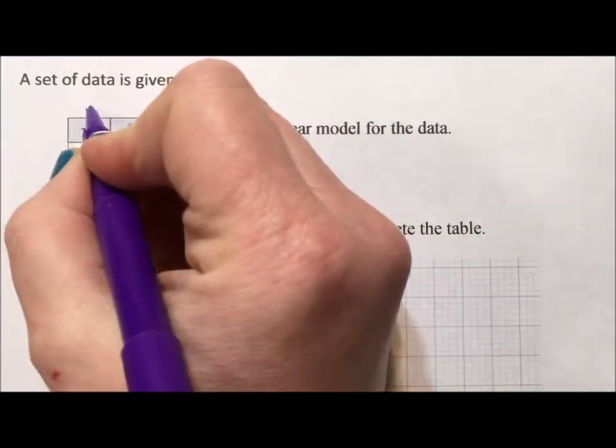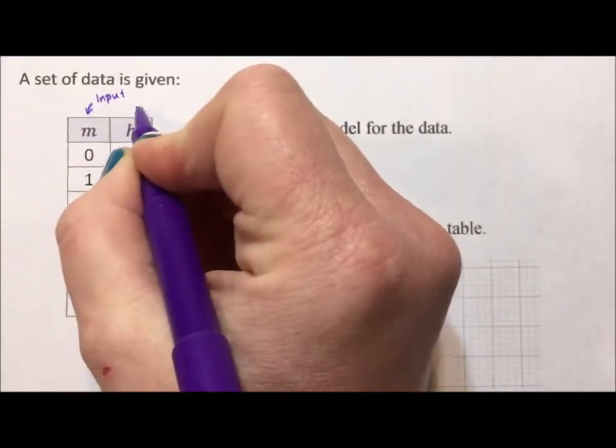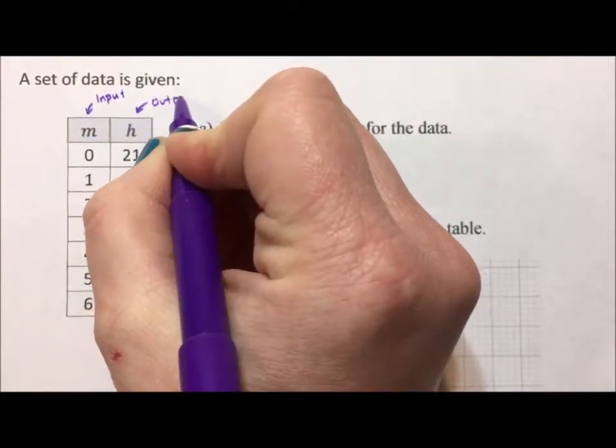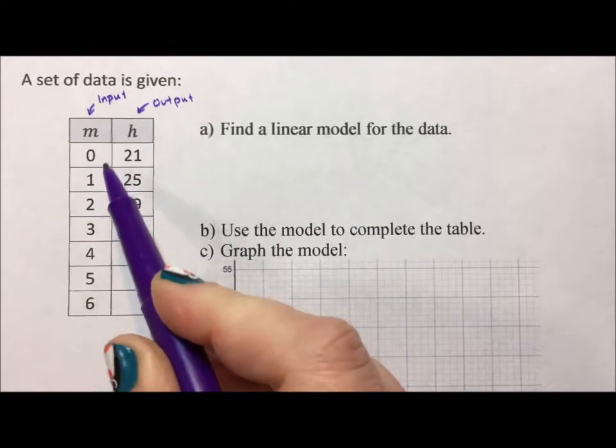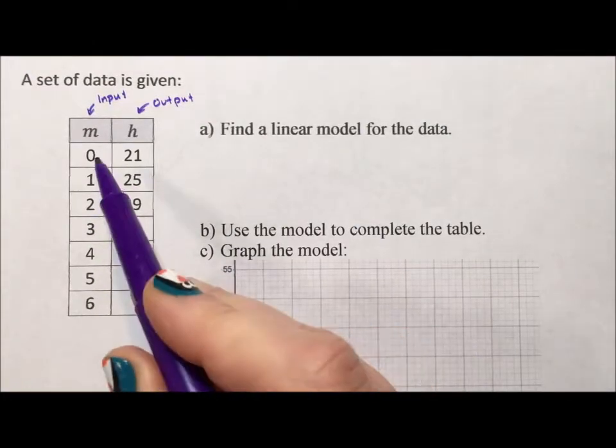Well, I notice, so this is my input. Input. This is my output. Output. And I notice right away that my input is going up at a step of one. That makes things easier.